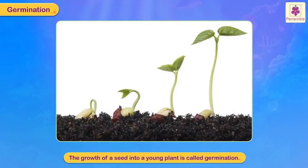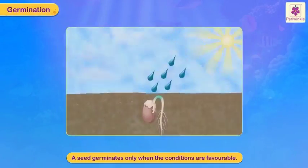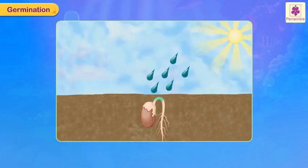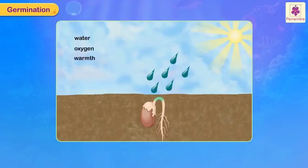The cotyledons disappear and the little plant is able to entirely support itself and grow on its own. The growth of a seed into a young plant is called germination. A seed germinates only when conditions are favorable — it needs the presence of water, oxygen, warmth, and sunlight to germinate.